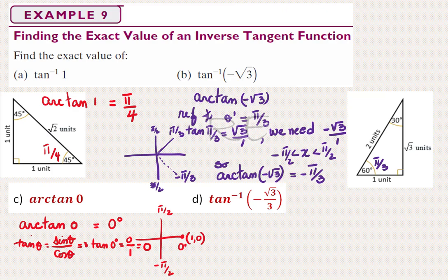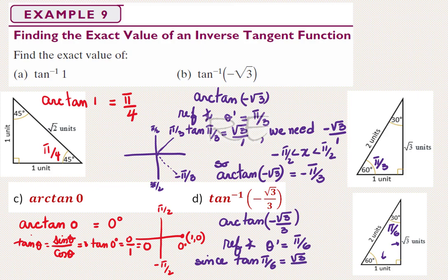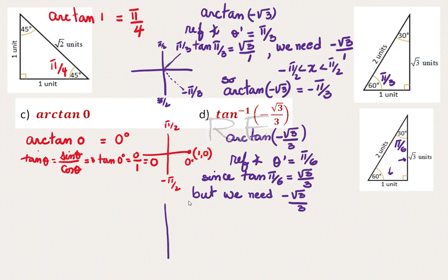Part D: inverse tangent of negative √3/3. We are looking for an arc whose tangent is negative √3/3. From the 1-2-√3 reference triangle, π/6 has a tangent of 1/√3, so the reference angle θ' equals π/6 because tan(π/6) = √3/3. We just need a sign correction since we don't have the negative sign yet. We do need to find the arc whose tangent is negative √3/3.